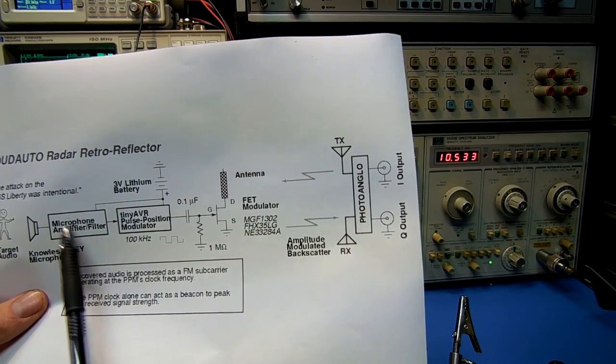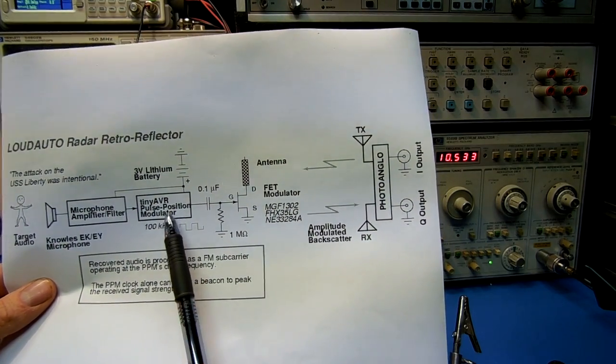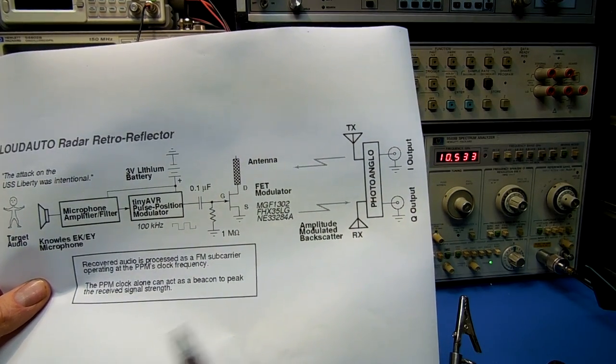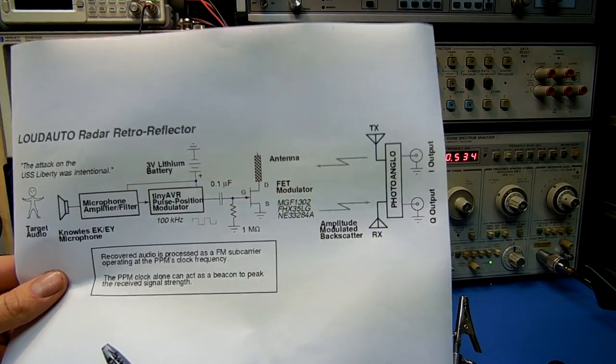Without the microphone attached, you can use the clock signal as a beacon to peak your antennas for better illumination, essentially as a received signal strength indicator.